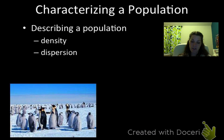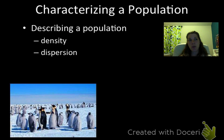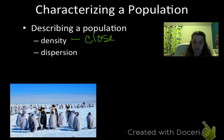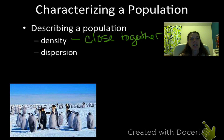The first thing we want to do is talk about how we characterize a population as biologists. The two primary things we talk about initially are the density of the population and the dispersion of the population. Density is really easy — it's how close together the organisms are, specifically the number of individuals per unit area or unit volume.